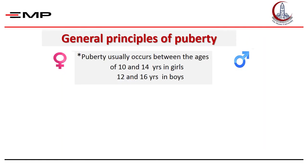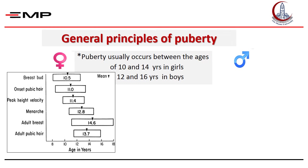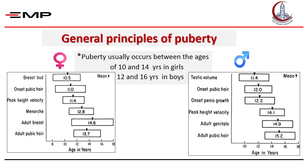Here are some facts regarding puberty. It usually occurs earlier in girls than boys, as it occurs between 10 and 14 in girls and 12 and 16 in boys. In girls, it starts with thelarche, which is breast enlargement. The boxes here represent the range of age of occurrence, while the arrows represent the mean. Thelarche will be followed by adrenarche, which is the appearance of pubic and axillary hair, then the occurrence of peak height velocity, lastly menarche, usually at the age of 12.8 years. While in boys, puberty starts with increase in testicular volume — more than 4 milliliters — followed by the appearance of pubic hair, then growth of the penis, lastly the occurrence of peak height velocity at the age of 14 years.